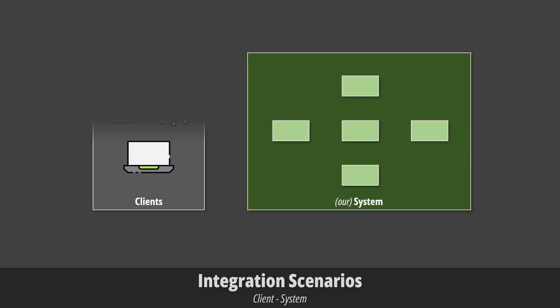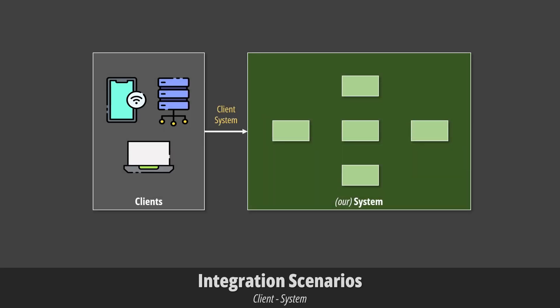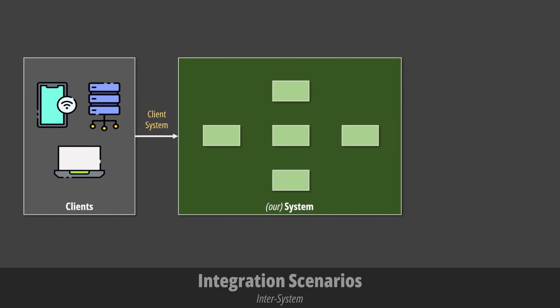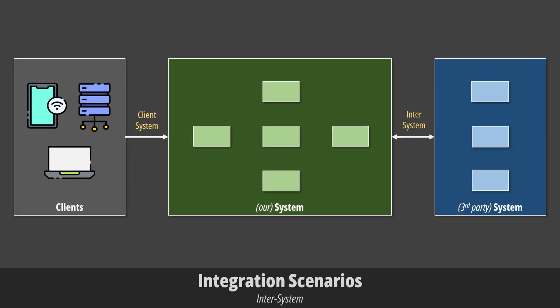What I like to do is look at the big picture and make system-level decisions. If we do that, we can see that we have three types of integration. First, we have clients like browsers, mobiles, or third-party applications integrating with our system — I call this client-system integration. Second, we have the necessity to integrate our own system with other systems, whether written by other development teams or third parties — I call this inter-system integration. Finally, we have to integrate microservices within our own system — this is intra-system integration.